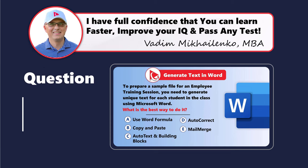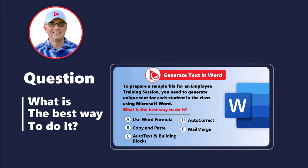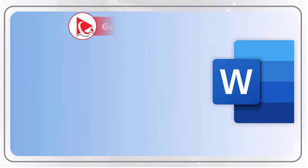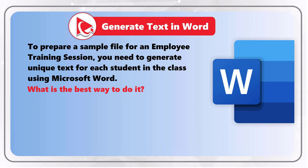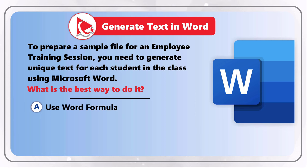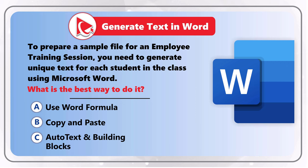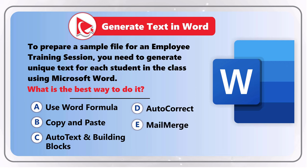Here's a tricky question seen on the test more and more often. To prepare a sample file for an employee training session, you need to generate unique text for each student in the class using Microsoft Word. What is the best way to do it? You are presented with five options: Choice A, Use Word Formula; Choice B, Copy and Paste; Choice C, Auto Text and Building Blocks; Choice D, Auto Correct; and Choice E, Mail Merge.